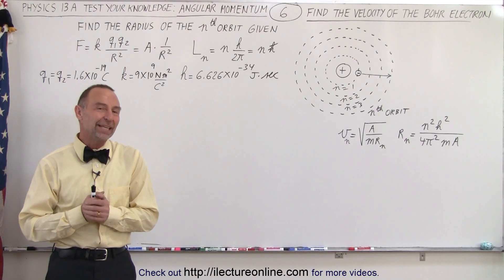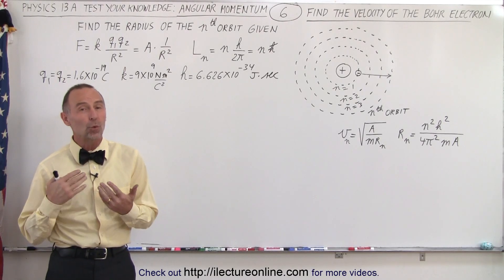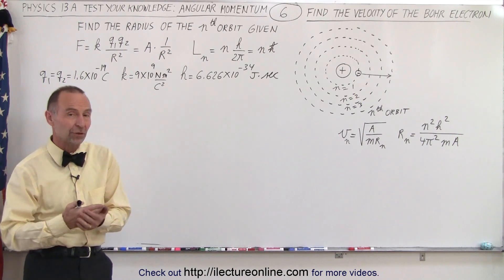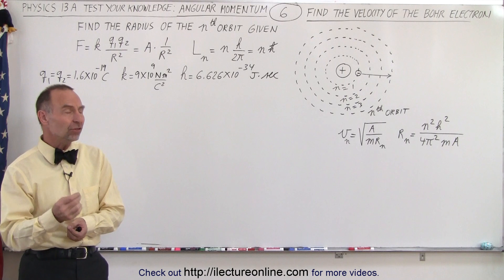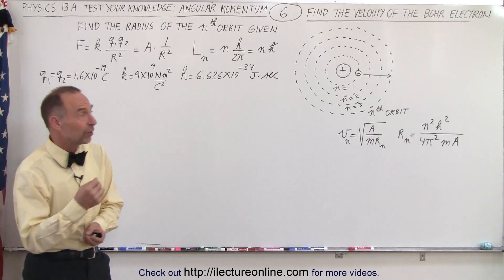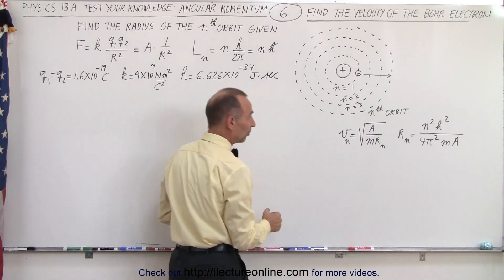Welcome to ElectronLine. In the previous video, we found an equation that described the radius of the nth orbit in the Bohr atom. But in addition to that, we can now also find the velocity of an electron in any of the orbits.